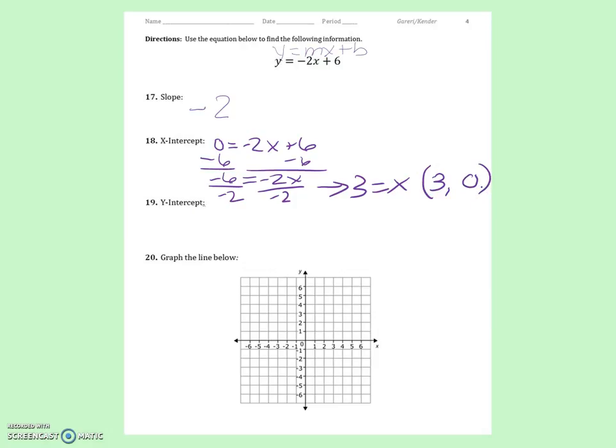The y-intercept we can get just by looking at this equation, because we know that b represents the y-intercept. We know that b equals 6 and the ordered pair would be 0, 6.